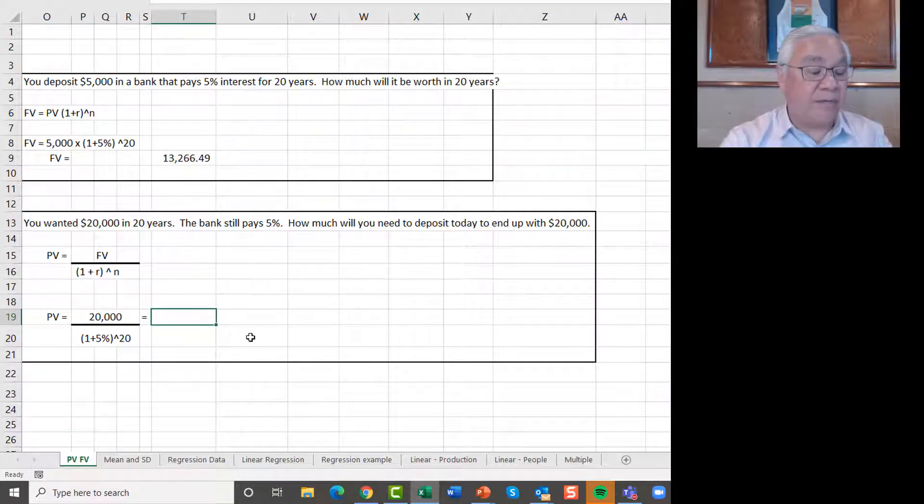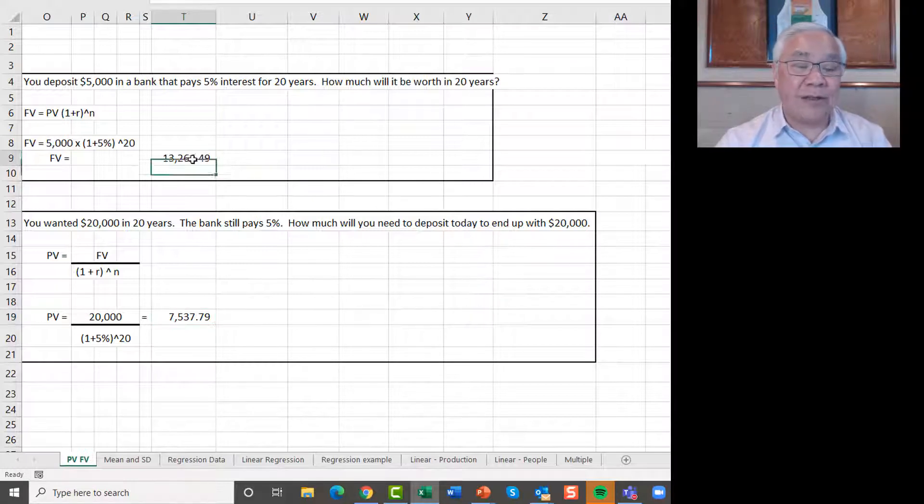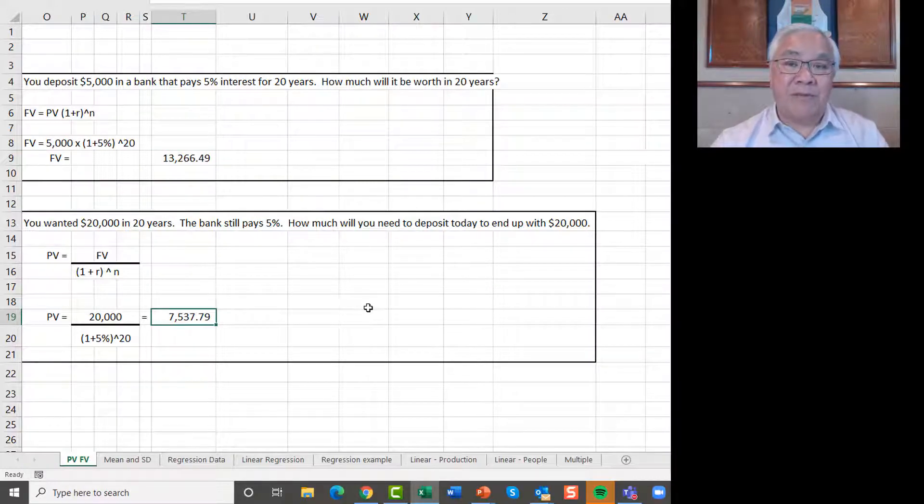So let's do that in the Excel formula, equals twenty thousand, divided by open parens, one plus 0.05, close parens, raised to the power of twenty years. And the answer is seven thousand five hundred and thirty seven dollars and seventy nine cents. So putting in five thousand dollars only got you the thirteen. But if you put in seven thousand five thirty seven, it'll get you to your desired target of twenty. So that's how we use the formula.